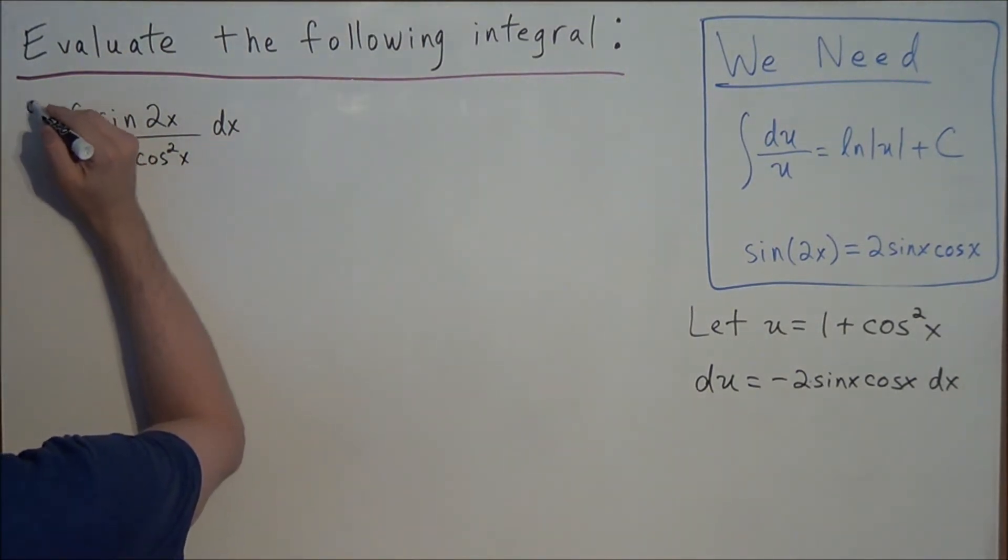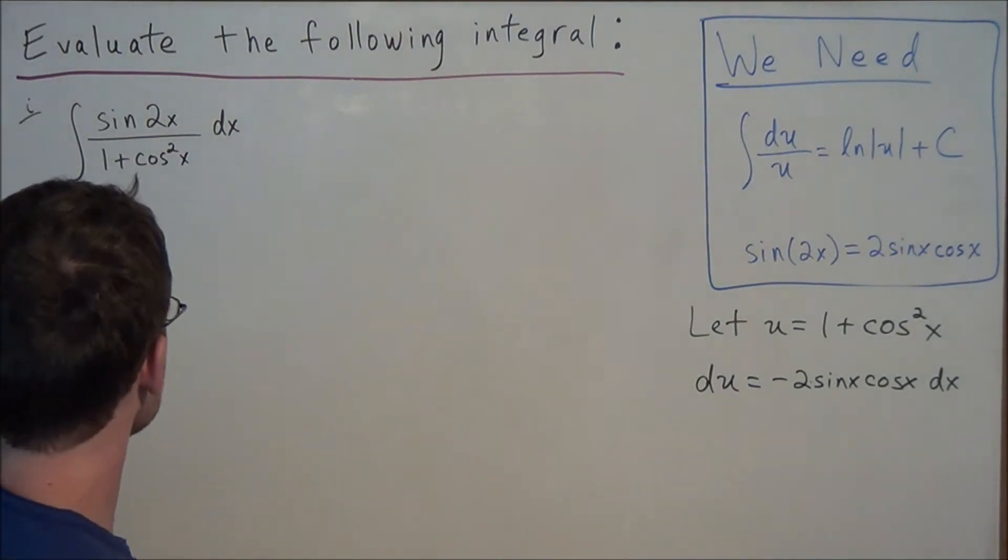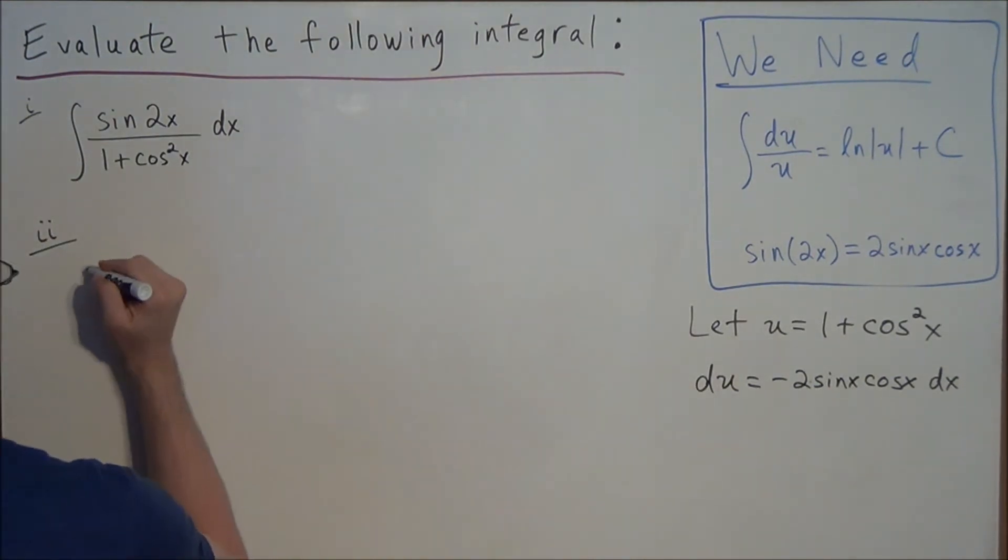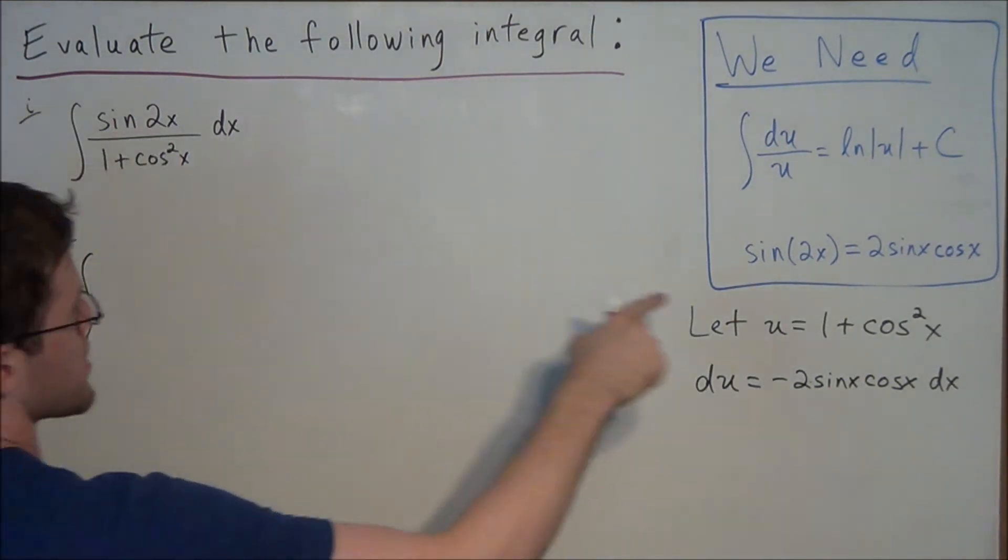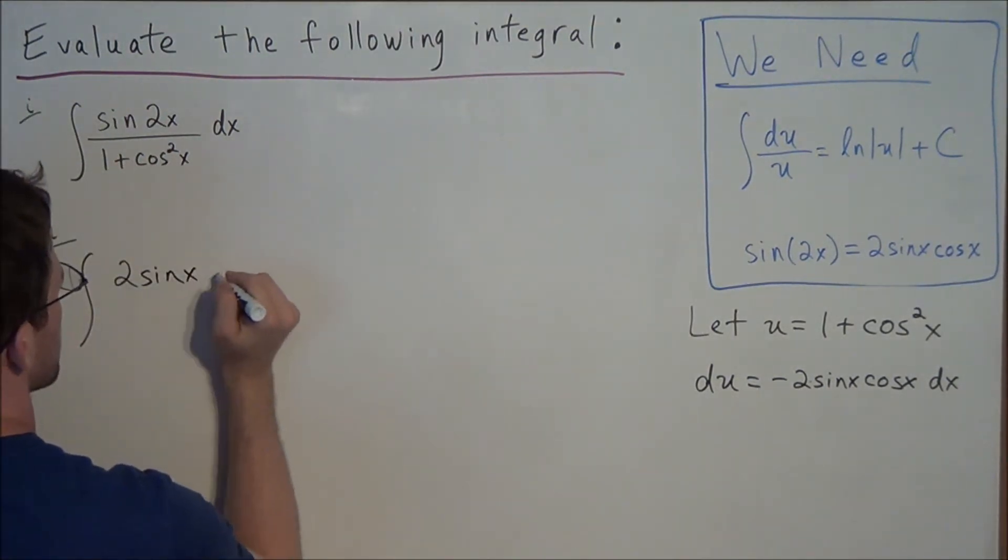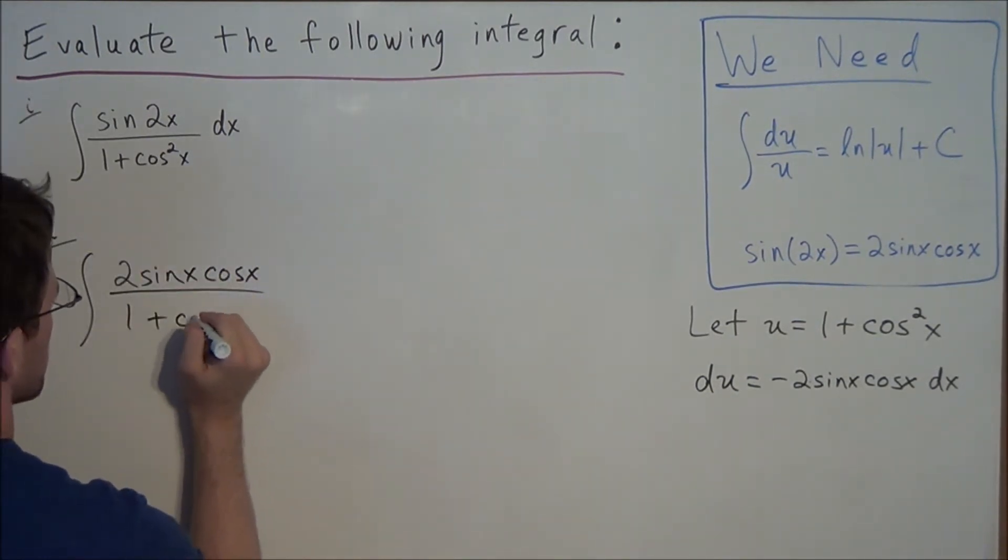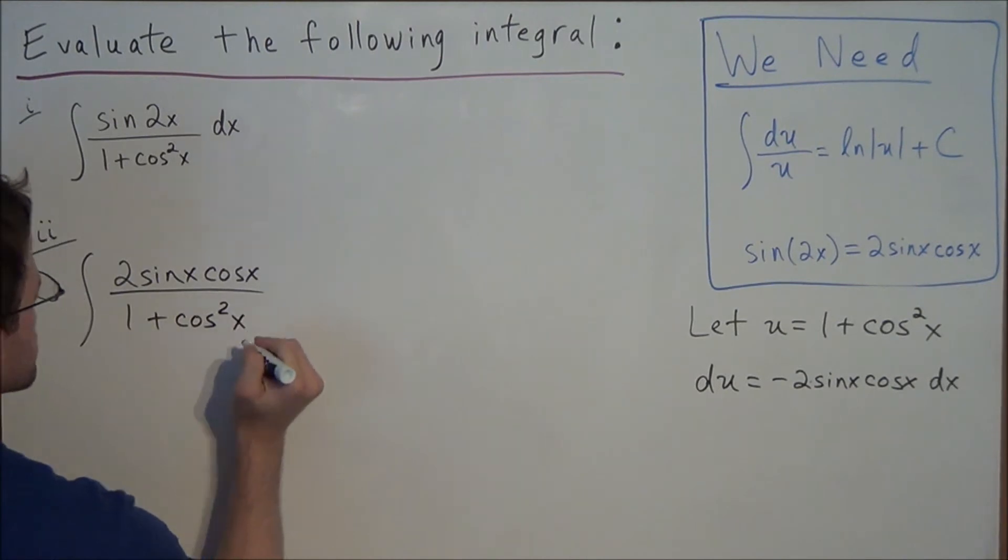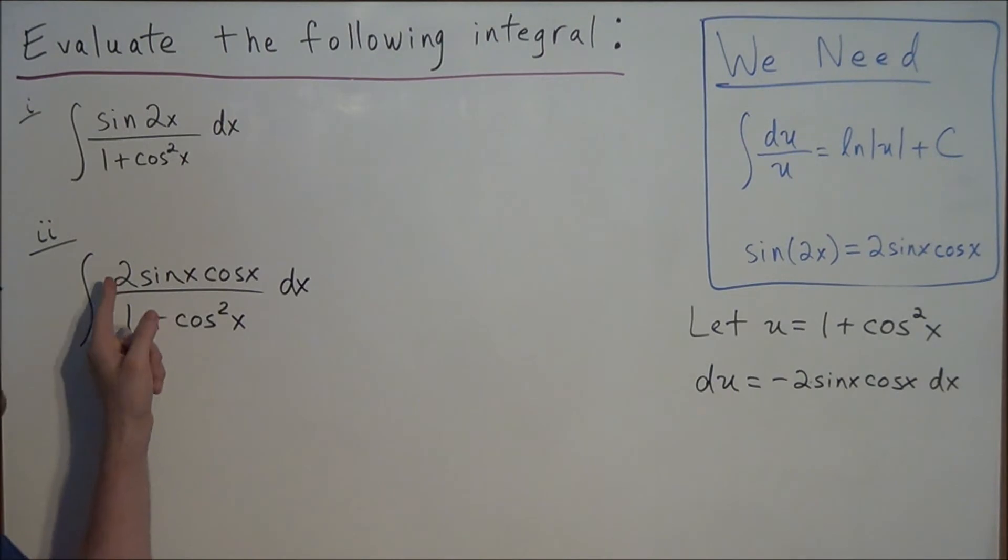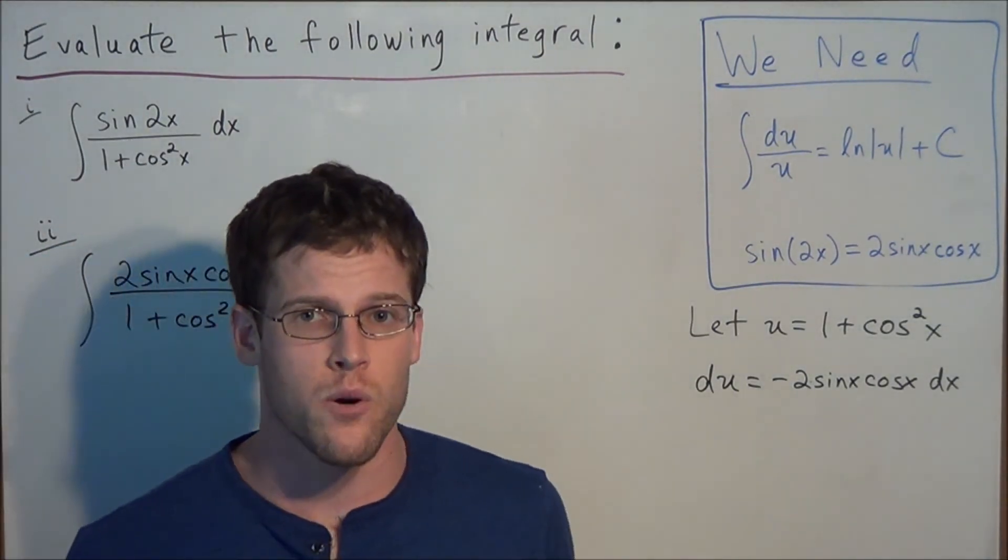So we're going to make use of this. We can call this our step 1. For step 2, we're going to make as many substitutions as we can. But maybe one thing we'll do to make everything jump out at us, we're going to replace sine 2x with 2 sine x cosine x over, and we're going to leave 1 plus cosine squared x, and we have our dx off to the side. But notice that the numerator, 2 sine x cosine x times dx, almost matches our du term.